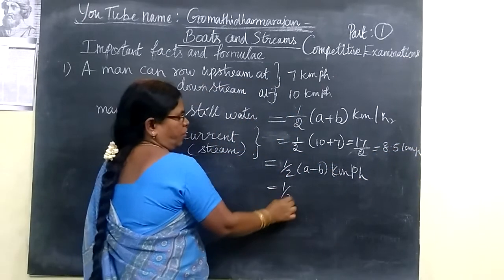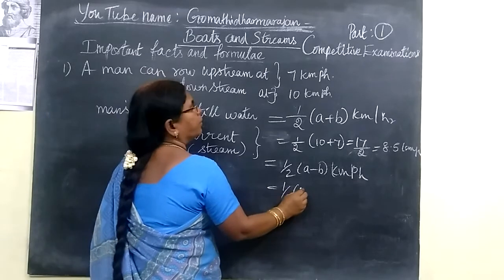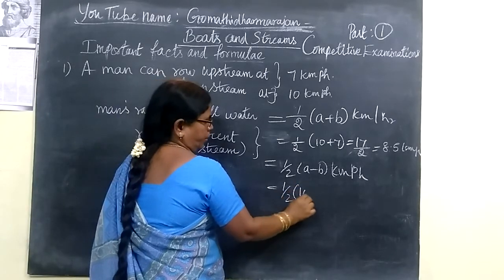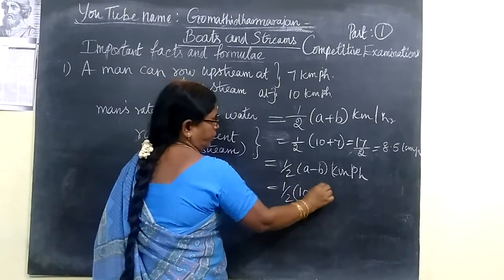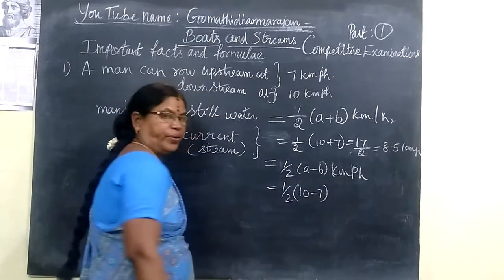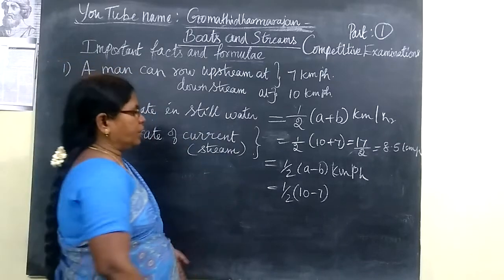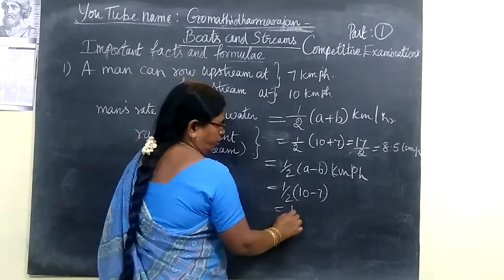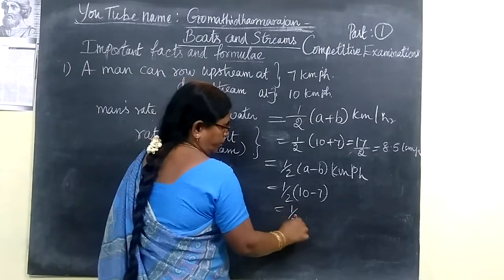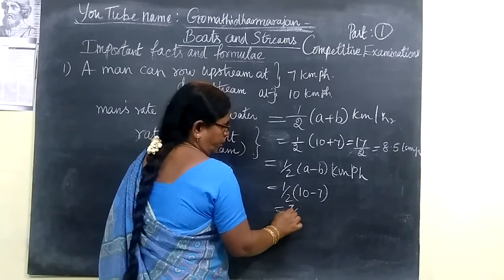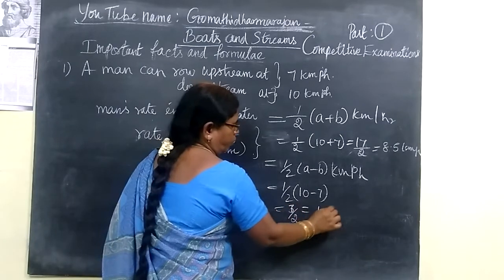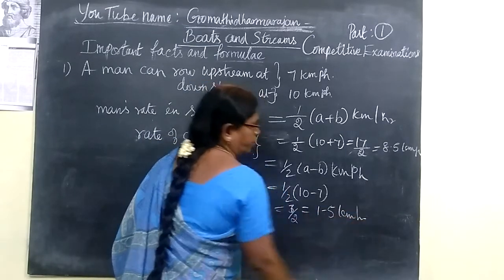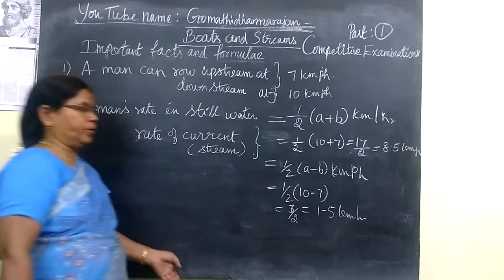And for the rate of stream, it equals half bracket (a minus b). So we take 10 minus 7, which is 3. So 3 by 2 equals 1.5 kilometers per hour.